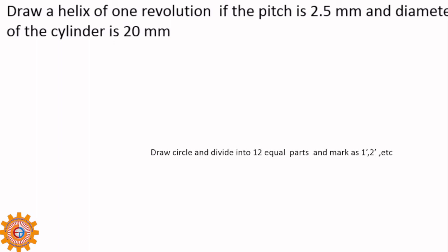For that, you have to draw a circle, and you divide that circle into 12 equal parts. And I will mark them as 1 dash, 2 dash, 3 dash, and so on and so forth. What is this rectangle? This shows the height or the length of the bolt. That is the cylinder. Cylinder top view is this one. And this is the front view.